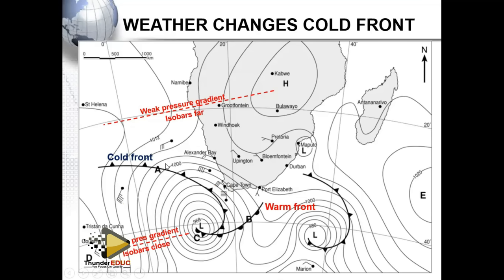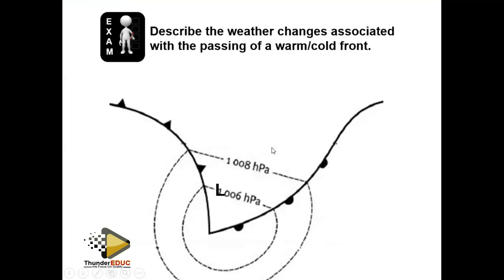On the synoptic map, families of cyclones are visible moving in a westerly direction. The Western Cape is affected by the cold front during winter. A high pressure system in the interior of South Africa indicates it is winter. During summer, the system moves further south away from South Africa.